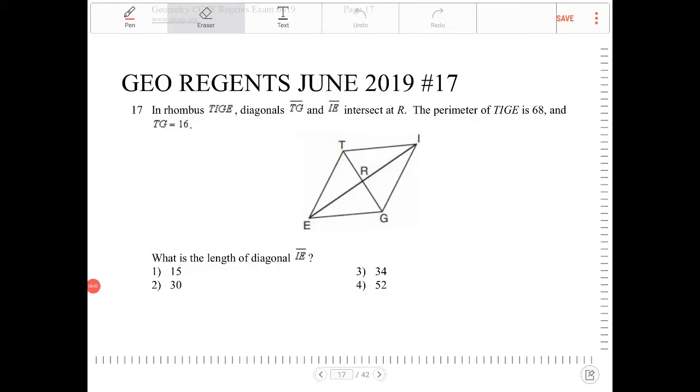In rhombus TIGE, diagonals TG and TIE intersect at R. The perimeter of TIGE is 68, and TG is equal to 16. So let's label that. The perimeter of TIGE is 68, and TG is 16.